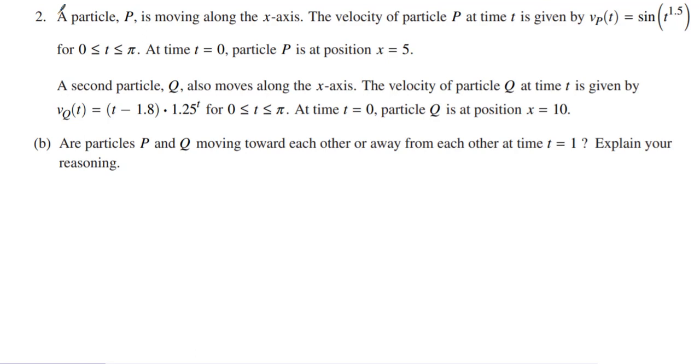Now we move to part B, which is are the particles P and Q moving towards each other or away from each other? And I have to explain our reasoning. So remember, I want to find v of p at 1, which is my f of 1. In my calculator, I just put f of 1 and I get positive 0.84147.